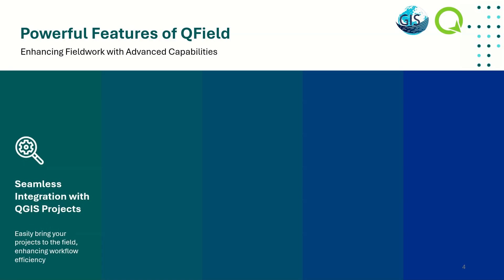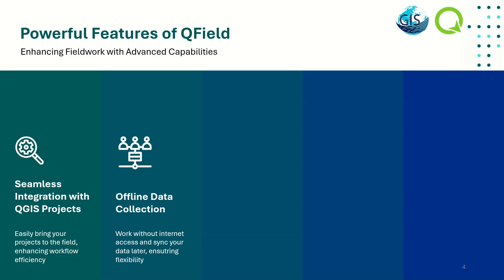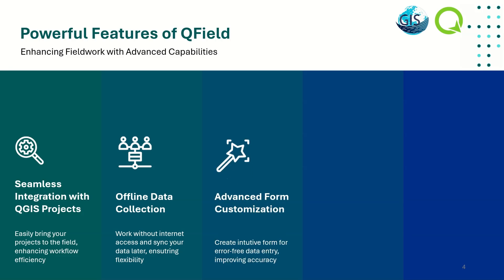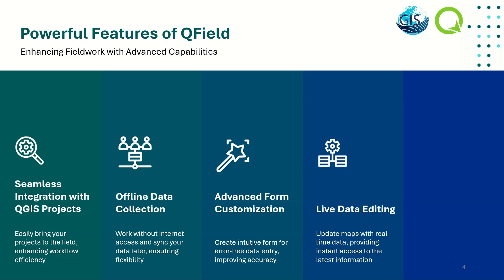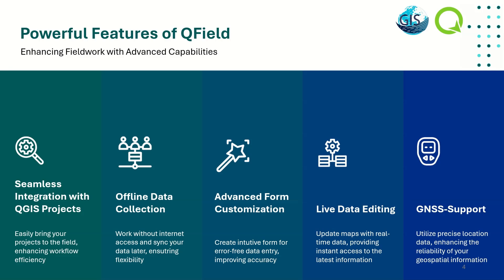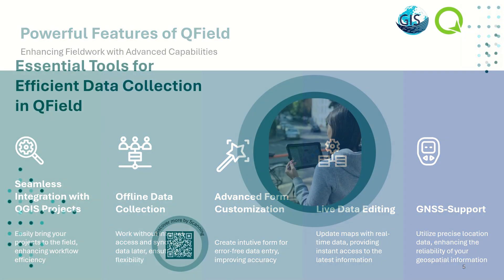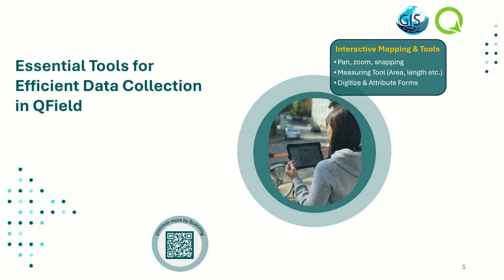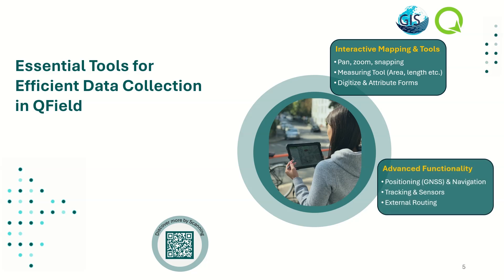QField is packed with essential tools for efficient data collection, making it ideal for on-site work. With advanced capabilities like offline data collection, form customization, live data editing, and GNSS support, QField enhances field work by improving data reliability, accuracy, and flexibility. Whether working online or offline, users can update maps and access the latest information without missing a beat.